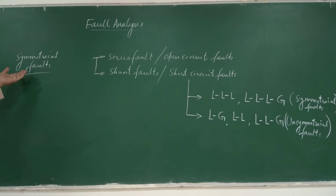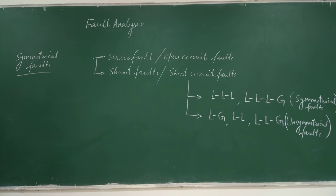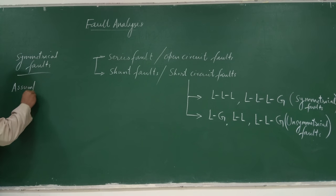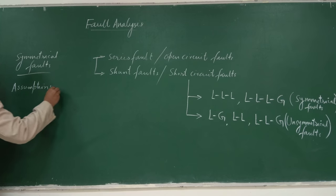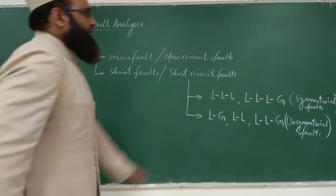Although the calculation is easy, symmetrical faults are the most severe faults in the power system. This fault imposes a high burden on the circuit breaker. In terms of short circuit capacity, we need to evaluate these capacities at various locations during fault conditions, and based on that, the ratings of circuit breakers are decided.